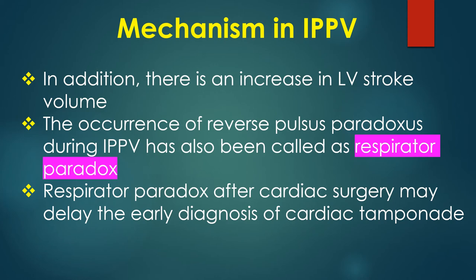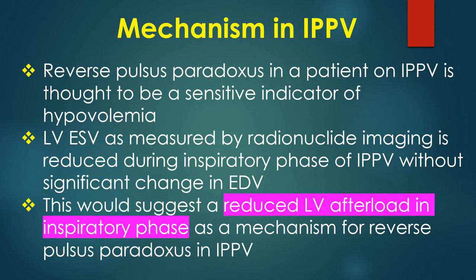Respirator paradox after cardiac surgery may delay the early diagnosis of cardiac tamponade. Reverse pulsus paradoxus in a patient on IPPV is thought to be a sensitive indicator of hypovolemia. LV end-systolic volume as measured by radionuclide imaging is reduced during the inspiratory phase of IPPV without significant change in end-diastolic volume, suggesting a reduced LV afterload as the mechanism.